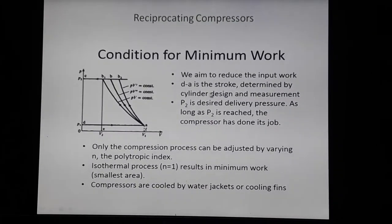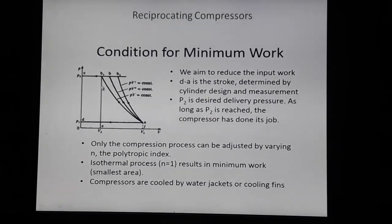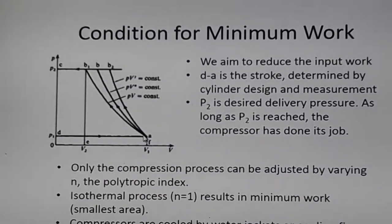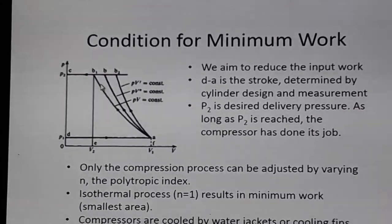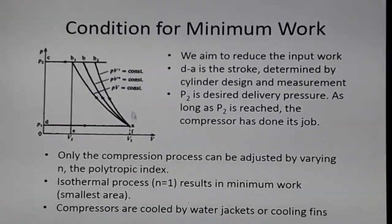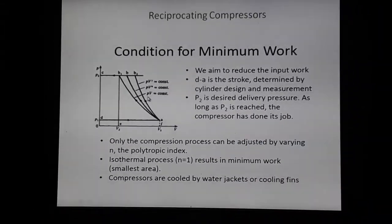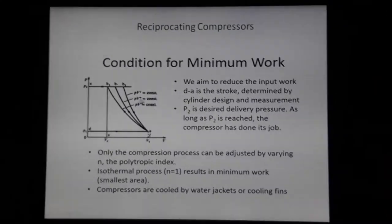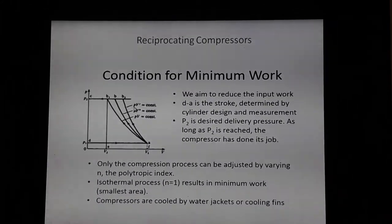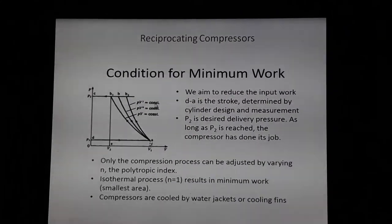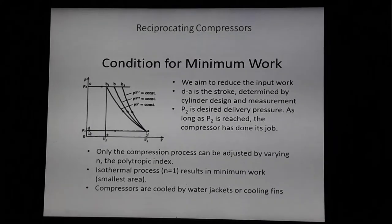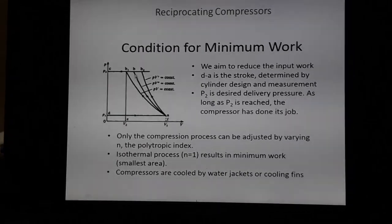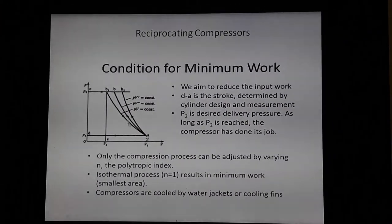In a compressor, compression may be adiabatic, polytropic, or isothermal. In the PV diagram, A to B1 is isothermal compression (PV = constant), A to B is polytropic compression, and A to B2 is adiabatic compression (PV^γ = constant). The work for the isothermal process is area A-B1-C-D, for polytropic it is A-B-C-D, and for adiabatic it is A-B2-C-D.